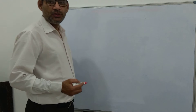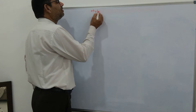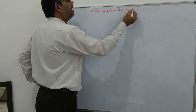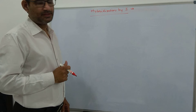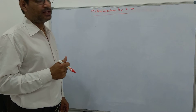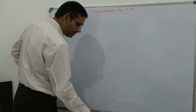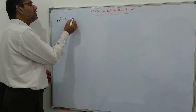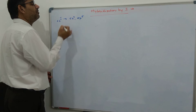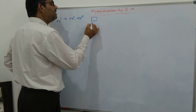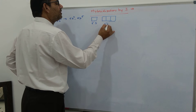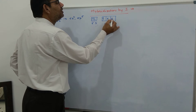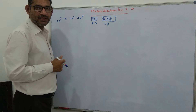Today we are going to discuss hybridization shown by iodine in different compounds, or different inorganic compounds. Iodine's atomic number is 53. Its electronic configuration is 5s² 5p⁵. In 5s, 2 electrons are there; in 5p, 1, 2, 3, 4, and 5 electrons are there.